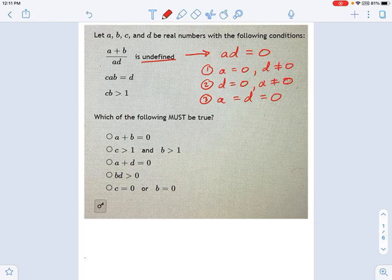Now, which of those possibilities would satisfy this next condition right here? C times A times B equals D. Well, if A is zero, I'm going to start with number one. If A is zero, then C times A times B is zero, which means D has to be zero. But this condition one says D is not equal to zero. So I know this condition one is actually not possible.